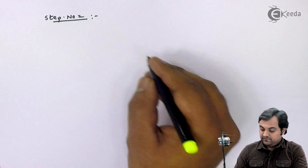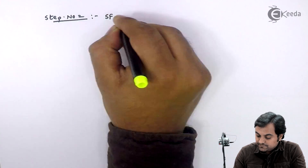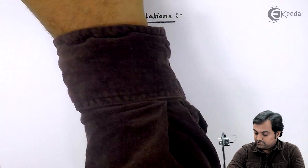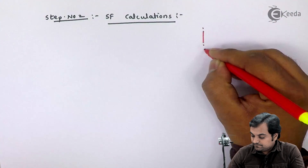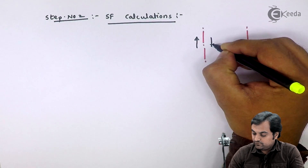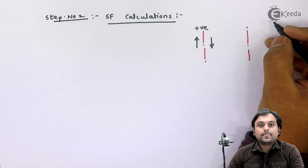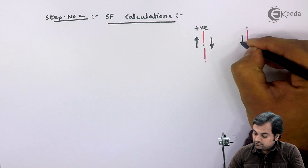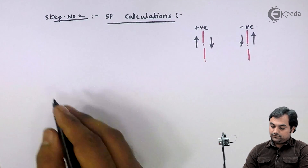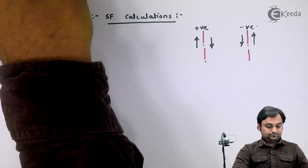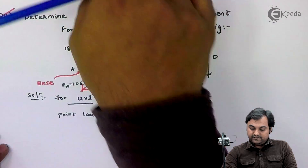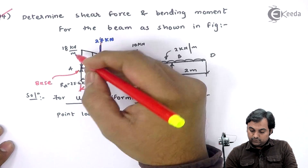Moving to step number two: shear force (SF) calculations. First we draw the sign convention — upward force to the left of the section is positive, and upward force to the right of the section is negative. I will begin by taking a section just to the right of A.